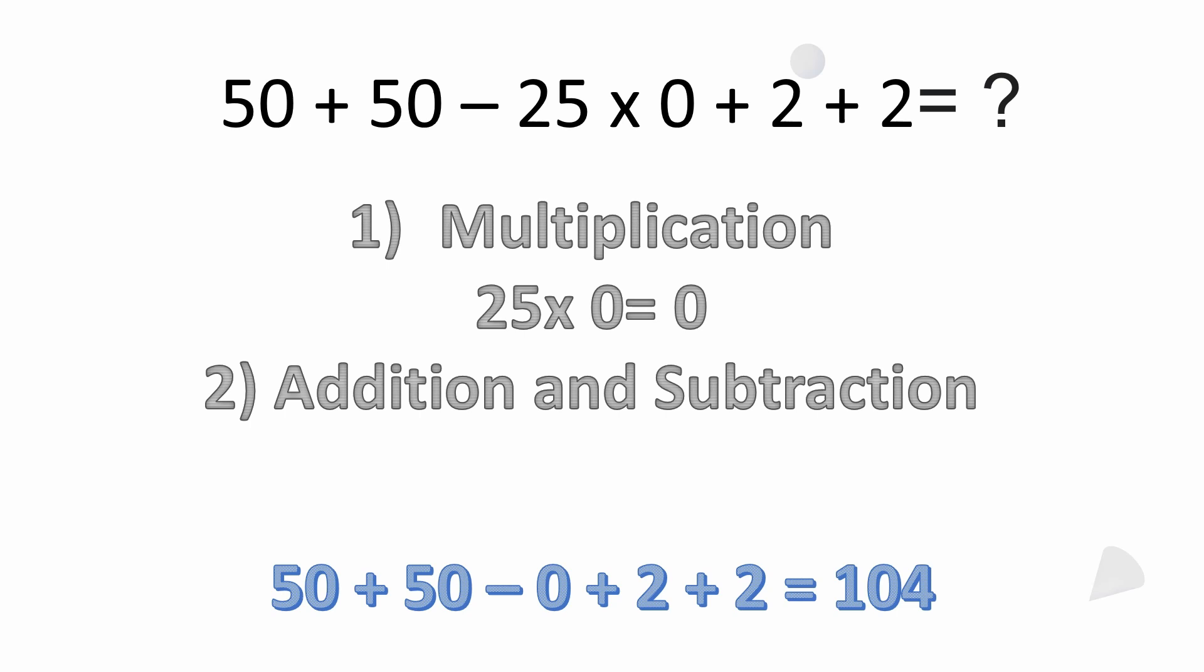Then the next thing you want to do is look at your addition and subtraction. So here the problem gets a lot simpler. It's 50 plus 50 minus 0. Keep in mind I did keep track of the negative sign. I do see some people get worried about that, but the minus sign is associated with that multiplication, so it's minus 0 plus 2 plus 2.